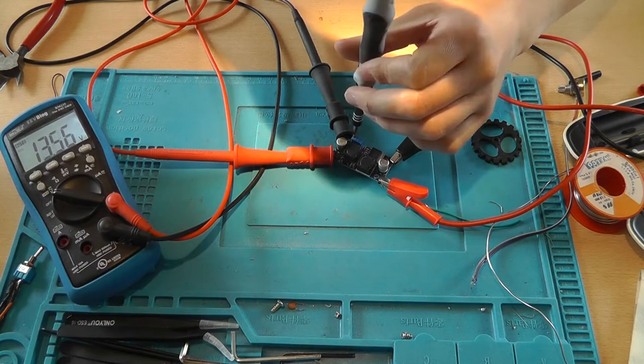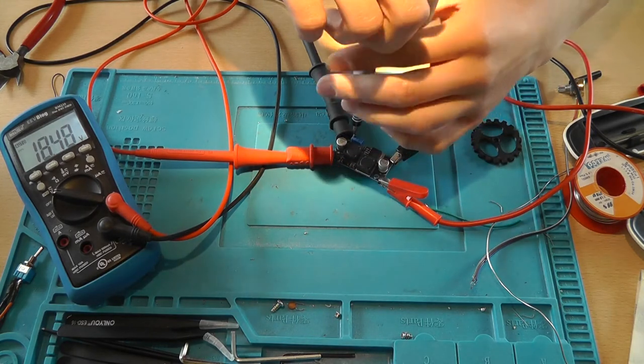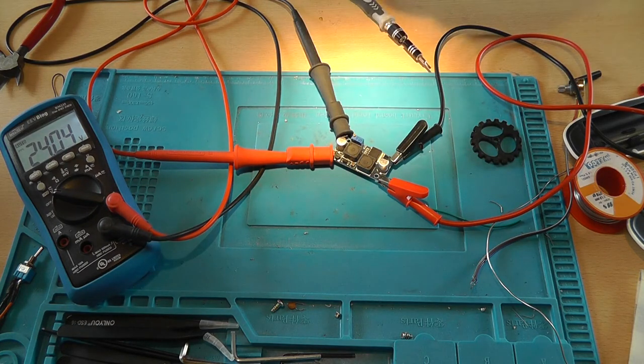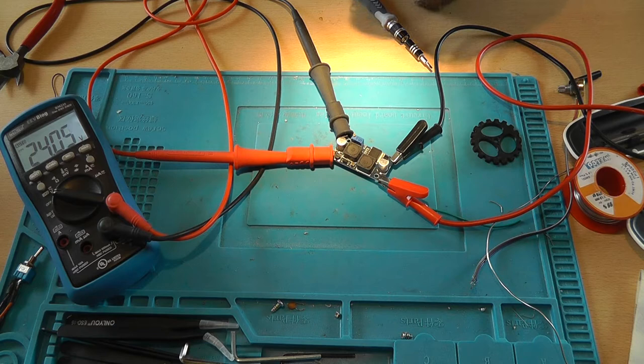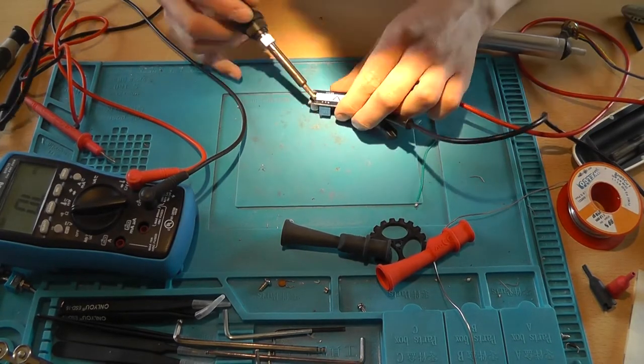So I looked around and the XL6009 was the only buck boost converter that I had laying around that was actually working. The other ones blew up.